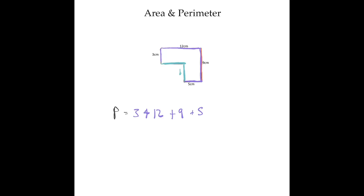To find the other missing side, I know it plus 5 centimeters must equal 12. So my missing value plus 5 equals 12. What plus 5 gives me 12? Seven plus five equals 12, so that other missing value is 7. Now I've filled in all the missing information, so I can add the final sides — another 6 and another 7 — to complete the perimeter.